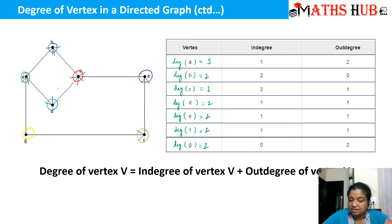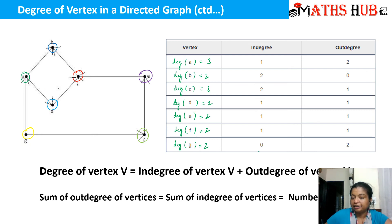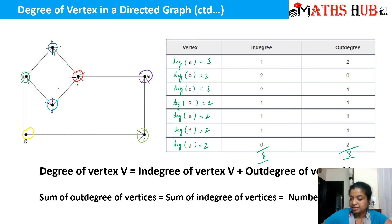There are some interesting features from this table. First, the degree of any vertex in a directed graph equals its in-degree plus out-degree. Second, the sum of all out-degrees of all vertices always equals the sum of all in-degrees, and both equal the number of edges. Here the sum of in-degrees is 8, the sum of out-degrees is also 8, and counting the edges gives 8 as well.